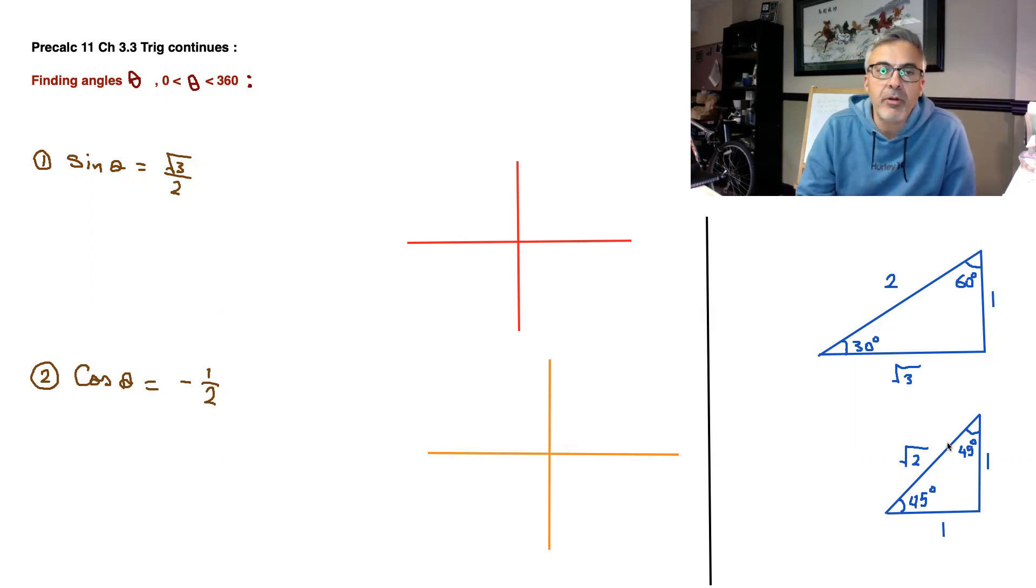The special angle triangles right there. You have to remember those to be able to find the angles. Also, remember that all students take calculus: 0, 90, 180, 270, and all around is 360 degrees.